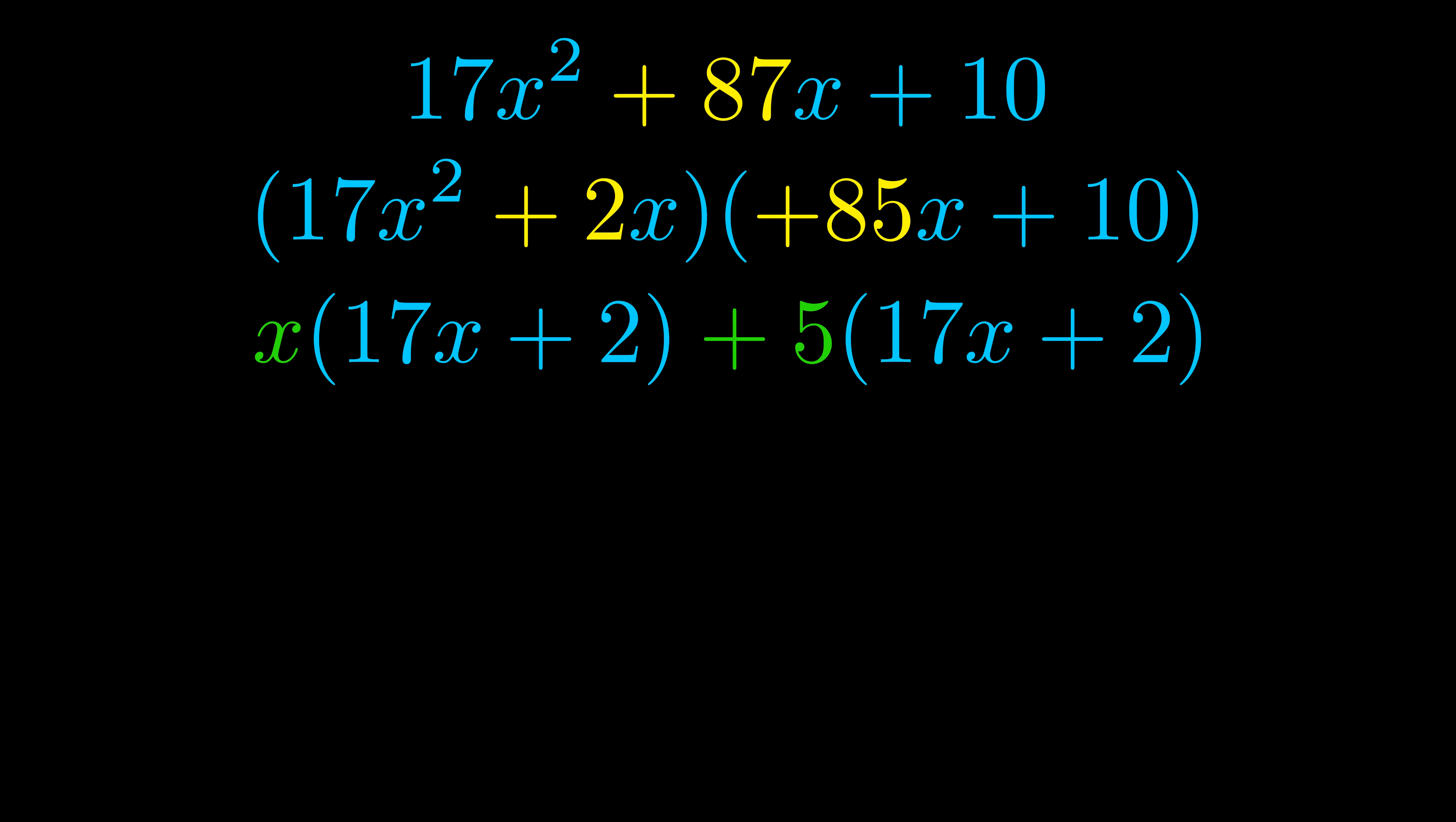Notice also how what remains inside of the parentheses is the same in both cases. The blue values are the same. Those blue values will become one of our factors, and we will combine the two green values, the GCFs that we pulled out, to get the other one. And that is our fully factored equation.